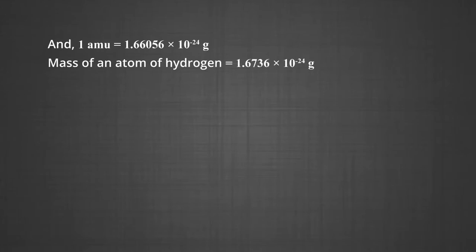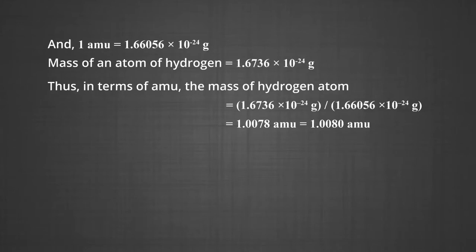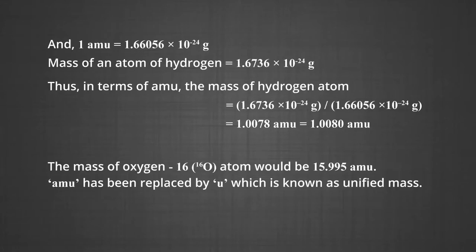One AMU is equal to 1.66056 × 10⁻²⁴ grams. The mass of an atom of hydrogen is therefore 1.6736 × 10⁻²⁴ grams. Thus, in terms of AMU, the mass of hydrogen atom is 1.6736 × 10⁻²⁴ grams divided by 1.66056 × 10⁻²⁴ grams, which equals 1.0078 AMU. Similarly, the mass of oxygen O-16 atom would be 15.995 AMU. Today, AMU has been replaced by small u, which is known as unified mass.